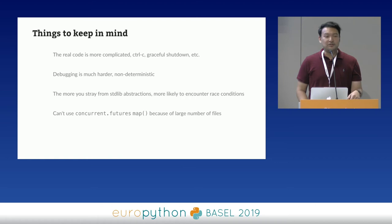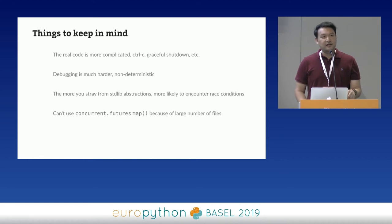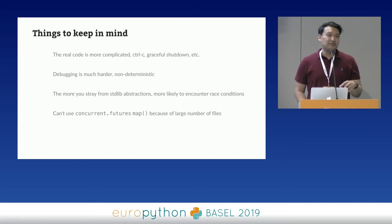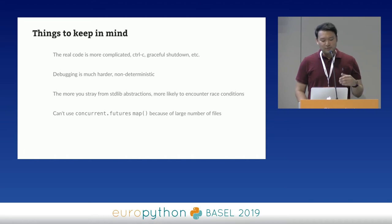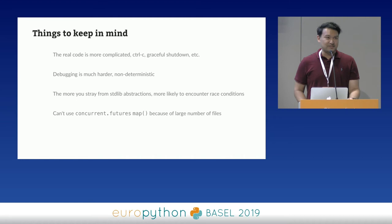A couple of other things to keep in mind with multi-threading: handling graceful shutdown when you Control-C is challenging — you can't explicitly shut down threads, you have to set some event or variable they periodically check. Debugging is really hard too — it's not deterministic, you typically can't use PDB, and you'll need something like PyCharm's debugger. And the more you deviate from the standard library and build on top of it, the more likely you are to encounter race conditions. Try to stick to the standard library when dealing with threads.